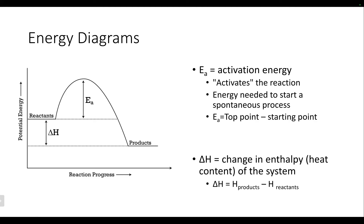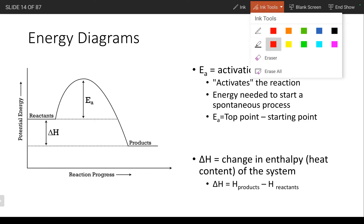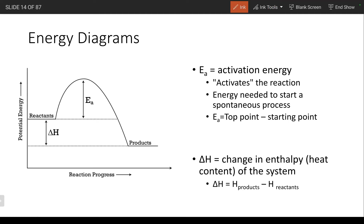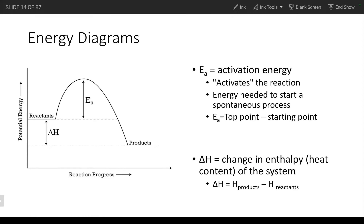If we're looking to calculate the activation energy using one of these potential energy diagrams, on the y-axis we'll actually have values. What we're looking at for the activation energy is the top point of that bump — that bump represents the energy barrier we need to overcome. We need to get to the top of that barrier, but we're not starting at zero; the reactants already have some amount of potential energy. So it's just going to be the difference between where we need to get to and where we're starting.